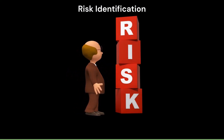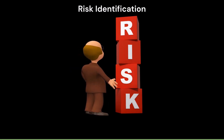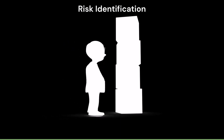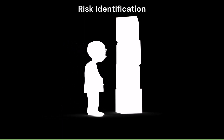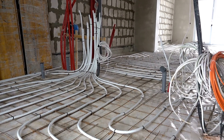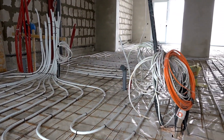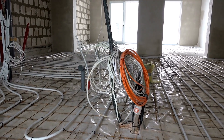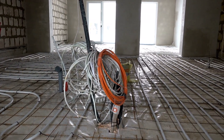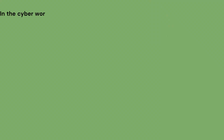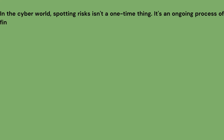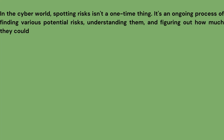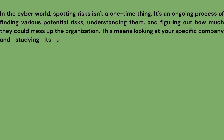How do you identify risks? Do you walk down the street watching out for traffic and looking for puddles? Maybe you've noticed loose wires at your desk or water on the office floor. In the cyber world, spotting risks isn't a one-time thing — it's an ongoing process of finding various potential risks, understanding them, and figuring out how much they could affect the organization. This means looking at your specific company and studying its unique situation.